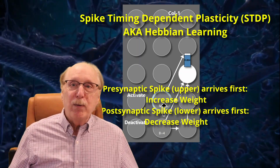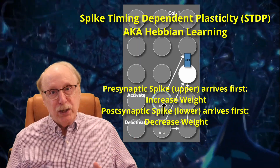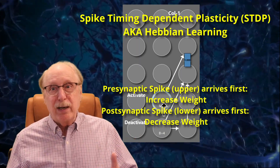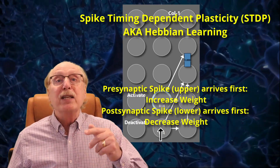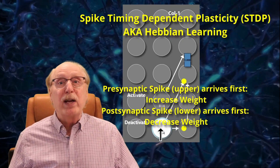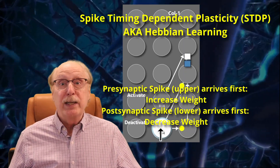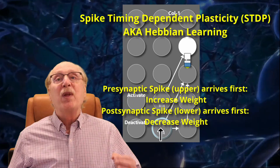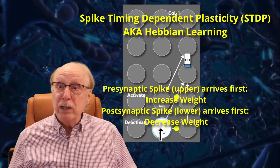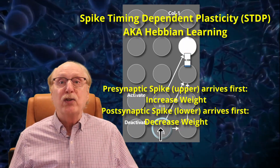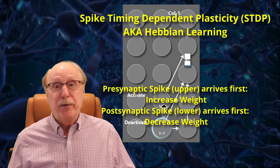You may remember the Hebbian rule: if the pre-synaptic spike comes before the post-synaptic, the synapse is strengthened. If it comes after, it's weakened. The rule gives us a biologically realistic way to turn our columns on and off.